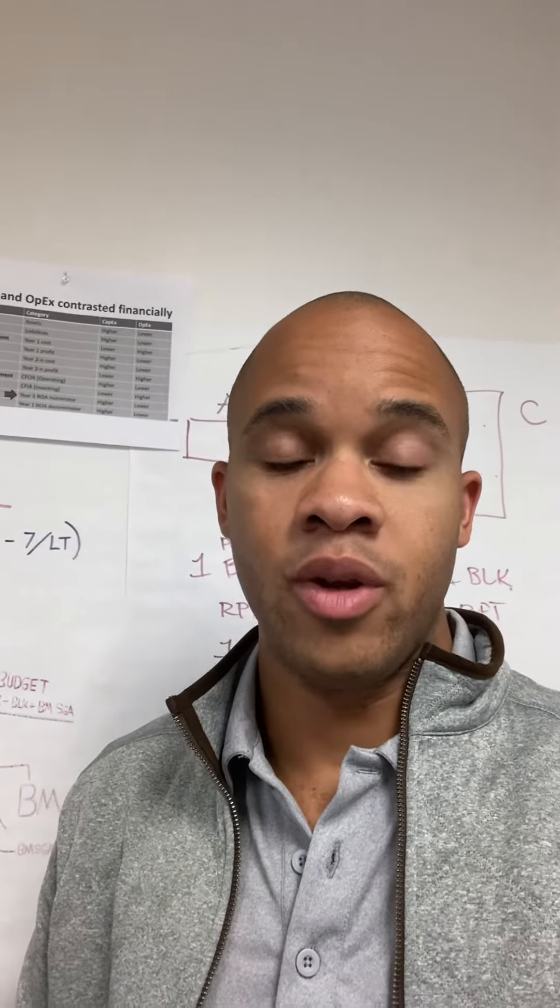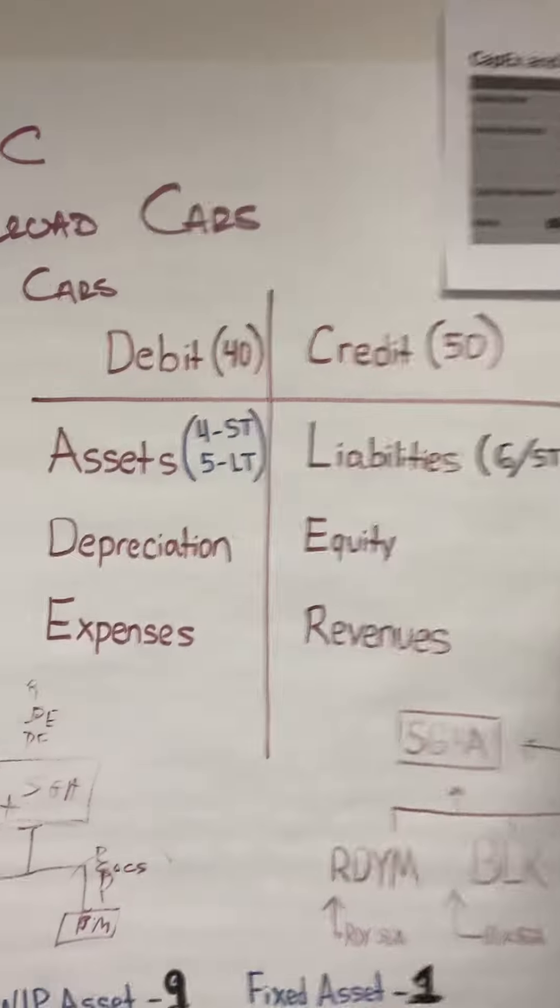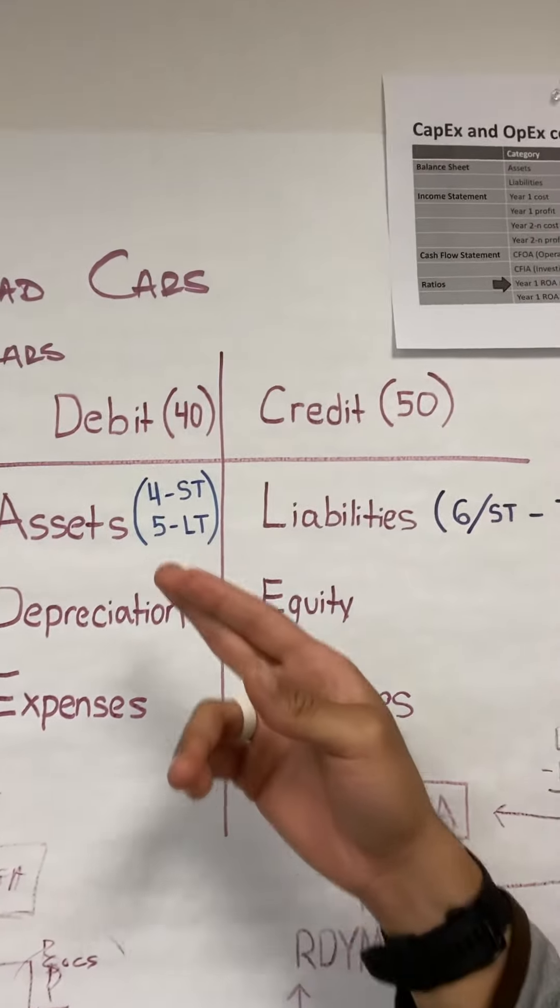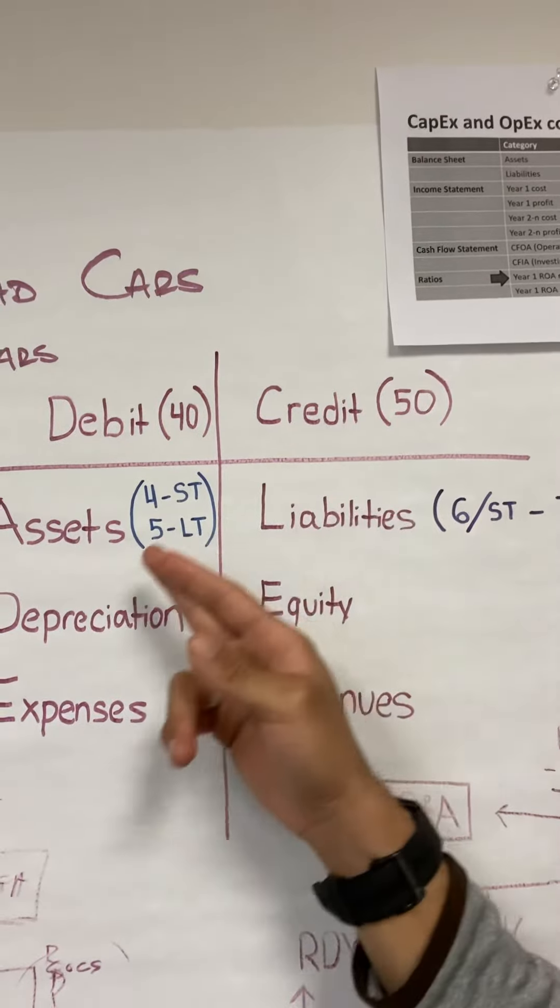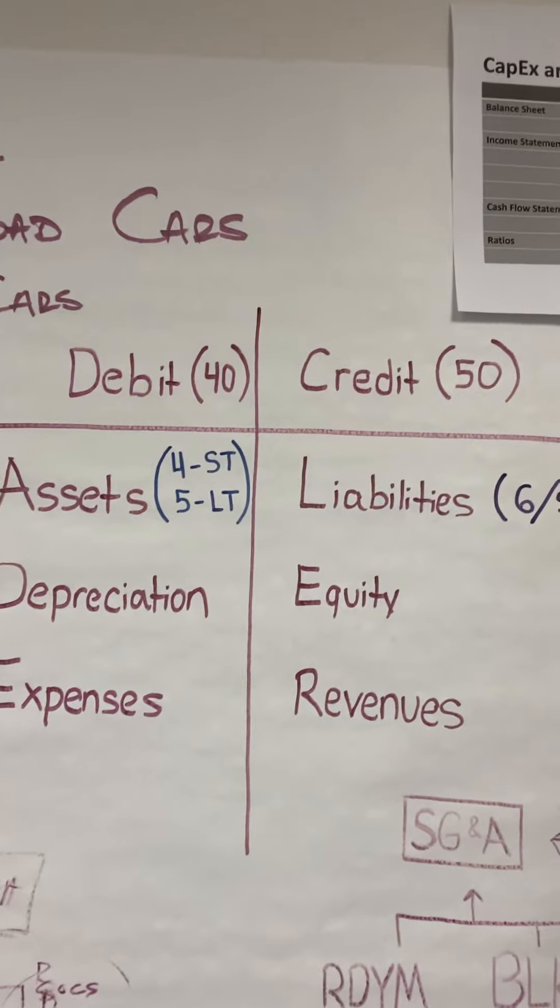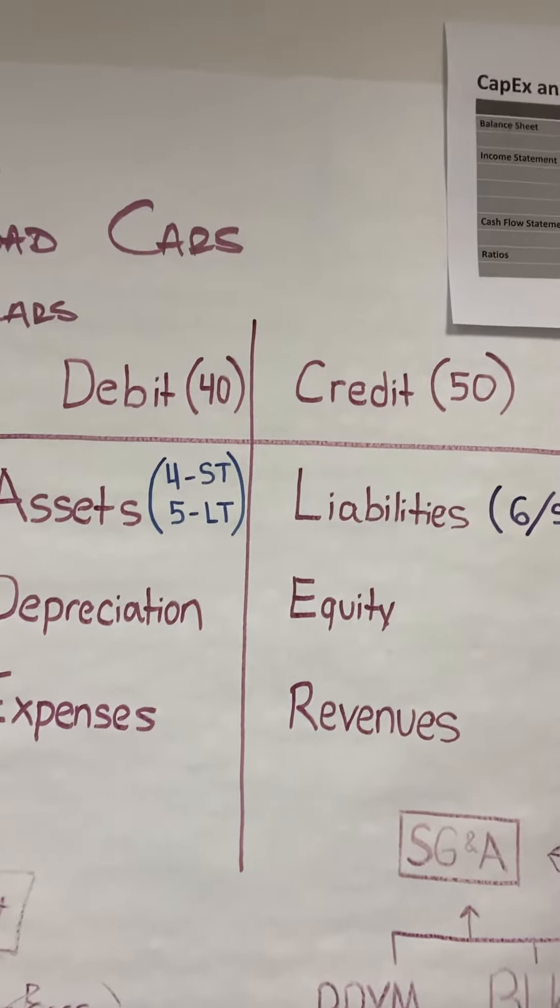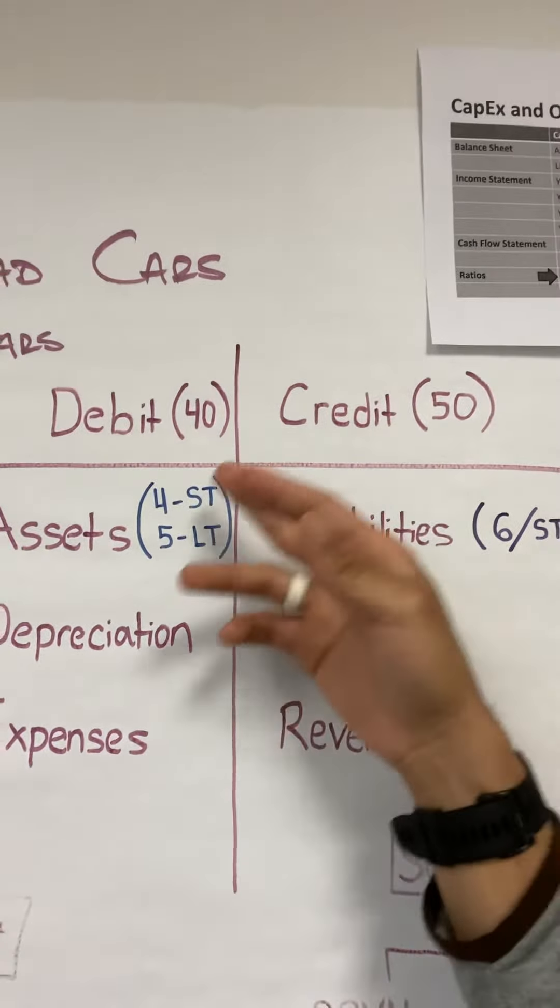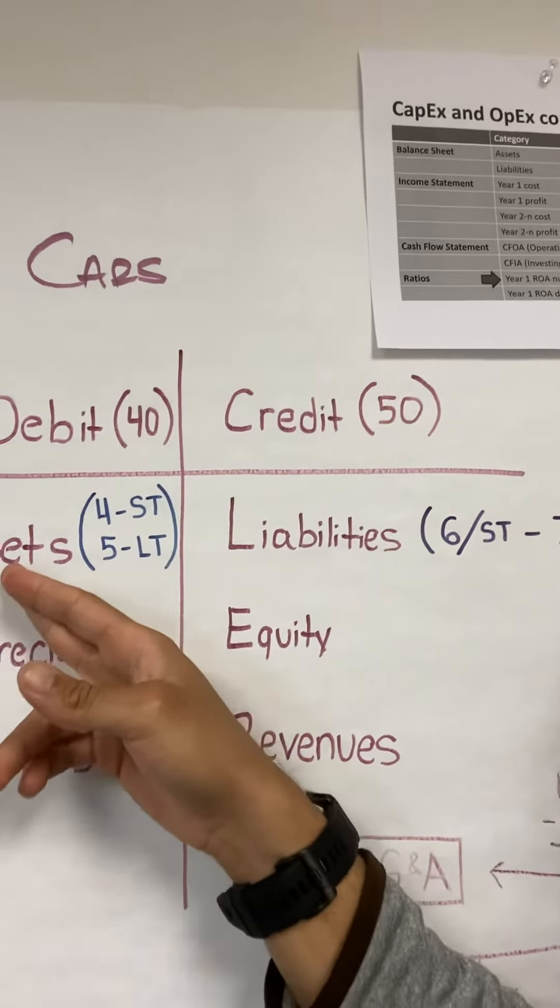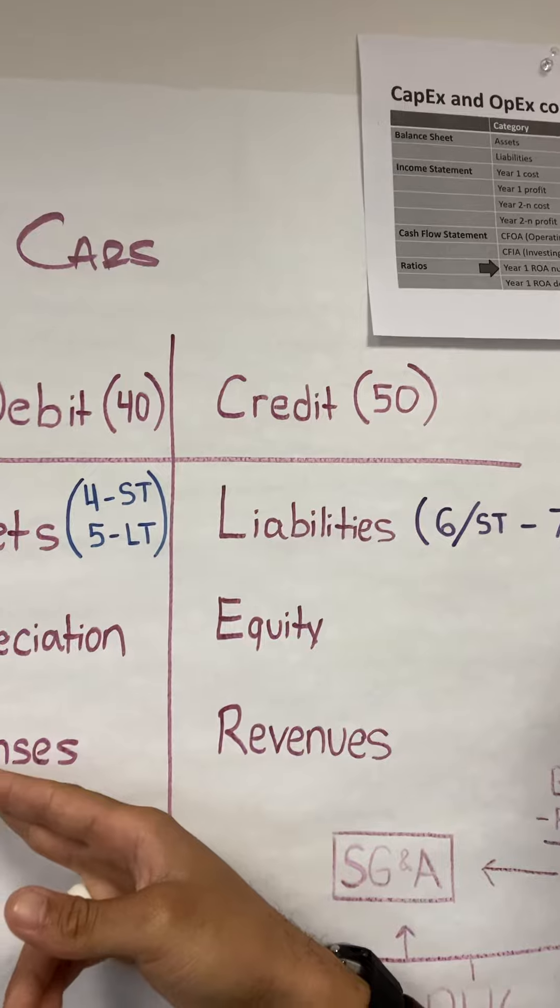Right here I have a basic layout of a T-account, and it's built out in the format of DC AIDLER, which was how another YouTube video taught me how to best understand the difference between debits. In order to increase your debits, you have assets, depreciation, and expenses. These increase when you debit them and decrease when you credit them.